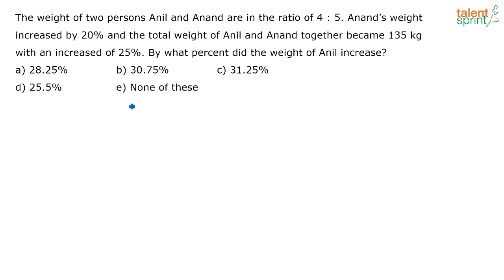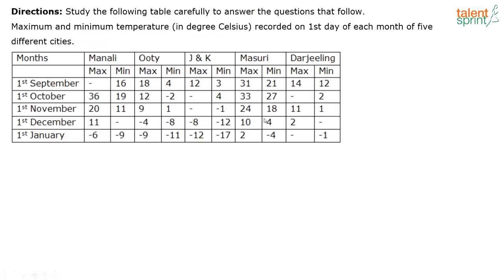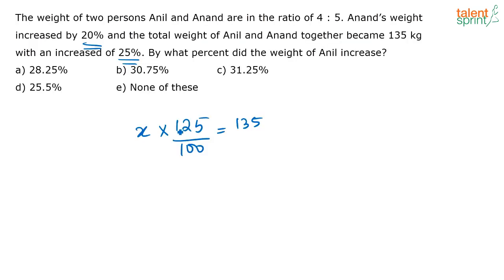If the total weight of Anil and Anand was X, and the net weight is increasing by 25%, then X × 125/100 = 135. We can simplify 125/100 as 5/4, since 25 divides both. So X = 135 × 4/5, which gives X = 108.